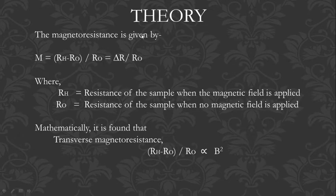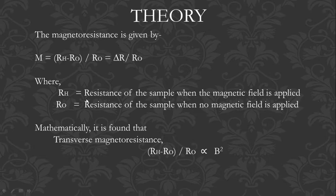The formula for magnetoresistance is: M equals (R_H minus R_0) divided by R_0, which equals ΔR / R_0, where R_H is the resistance of the sample when the magnetic field is applied.